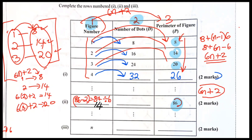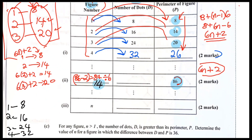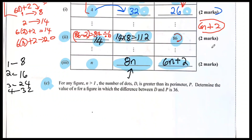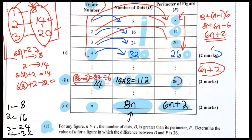Now how do you move from column one to column two? We already found that column-one value 14 corresponds to column three. For column two, you simply multiply by 8. So the formula for column two is 8n. The formula 6n + 2 is for column three, for any figure where n is greater than one. The dots and the expression d represents column two, and p represents column three.